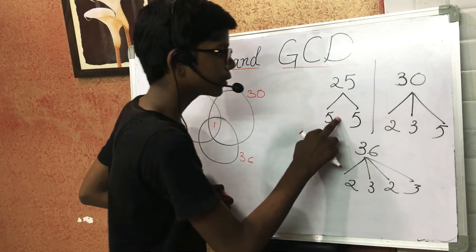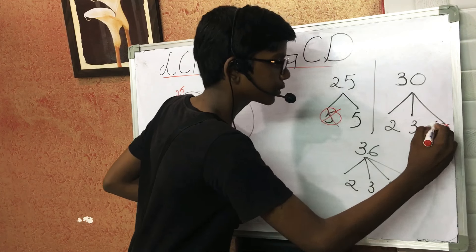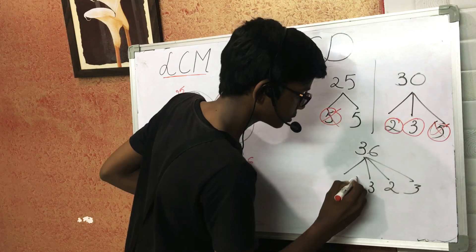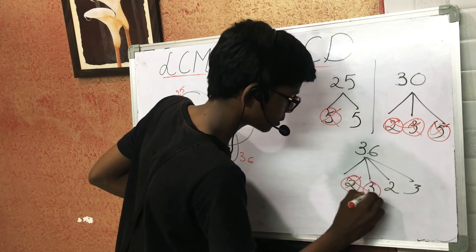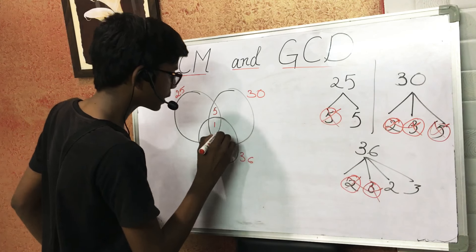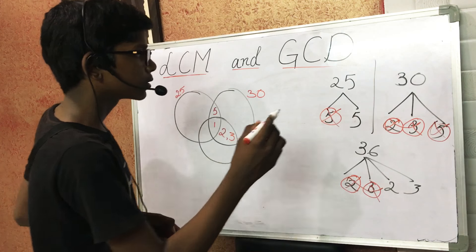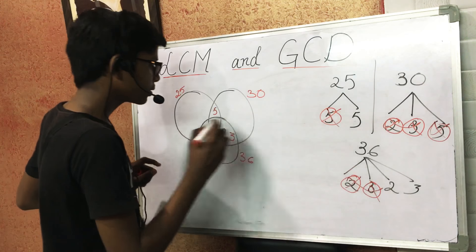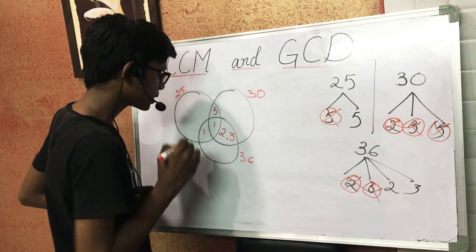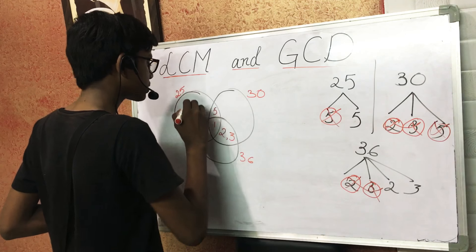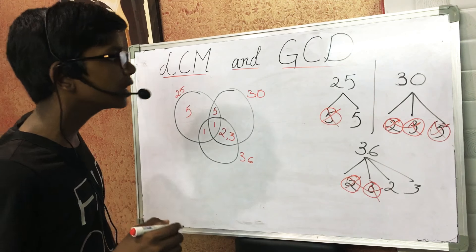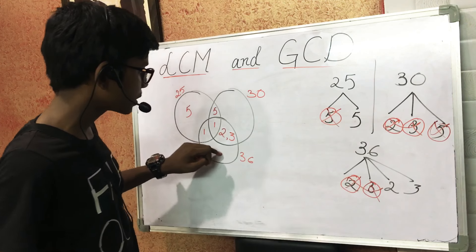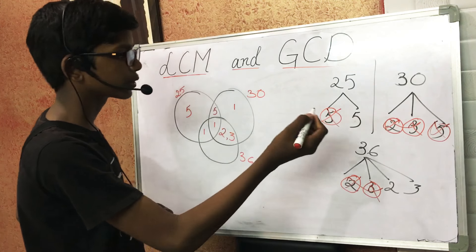The common factors of 25 and 30 — they are 5 and 5 — should be placed in their common space. The common factors of circles 30 and 36 should be placed in their common space. There are no common factors of 25 and 36, so 1 should be placed there. The remaining factors of 25 and 36 go in their respective circle spaces. There are no remaining factors for 30, so 1 should be placed.